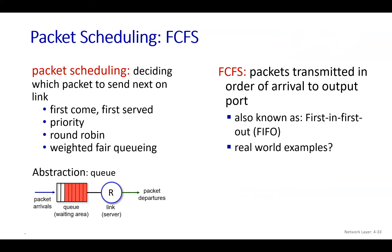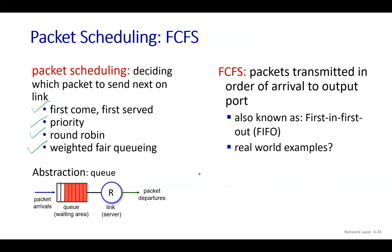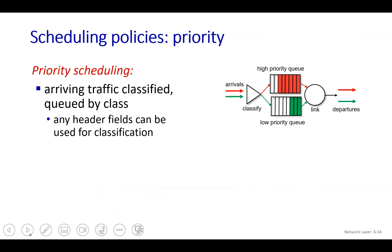Now, packet scheduling — how to process queued packets. There are four main types: first come first serve (FIFO), priority-based scheduling, round robin, and weighted fair queuing. FIFO is simple and familiar from everyday life — whoever arrives first gets served first. Packets arriving first are processed first; packets arriving later are processed later.